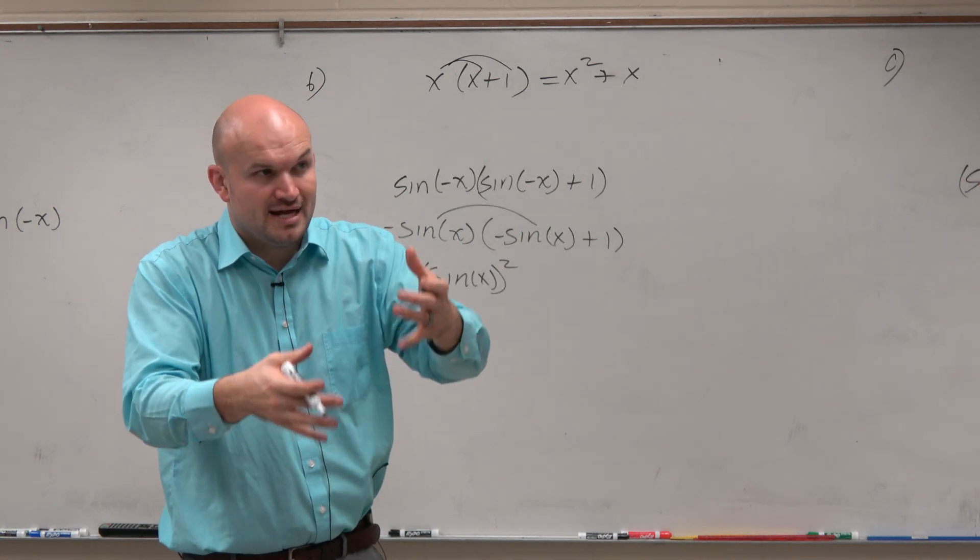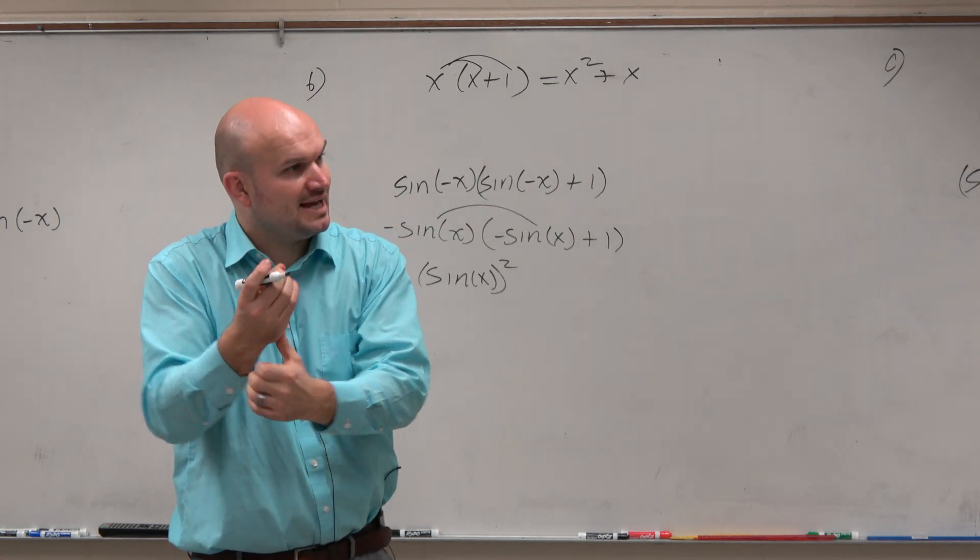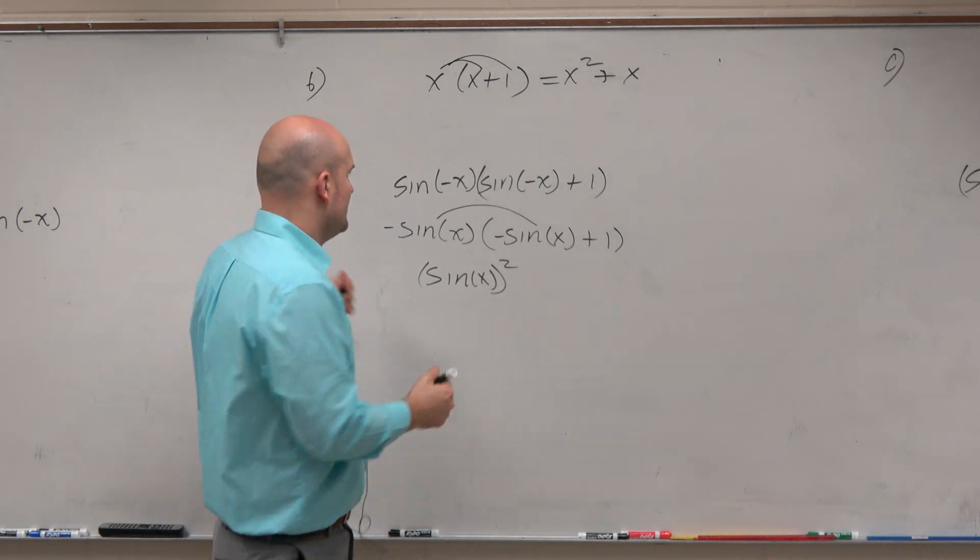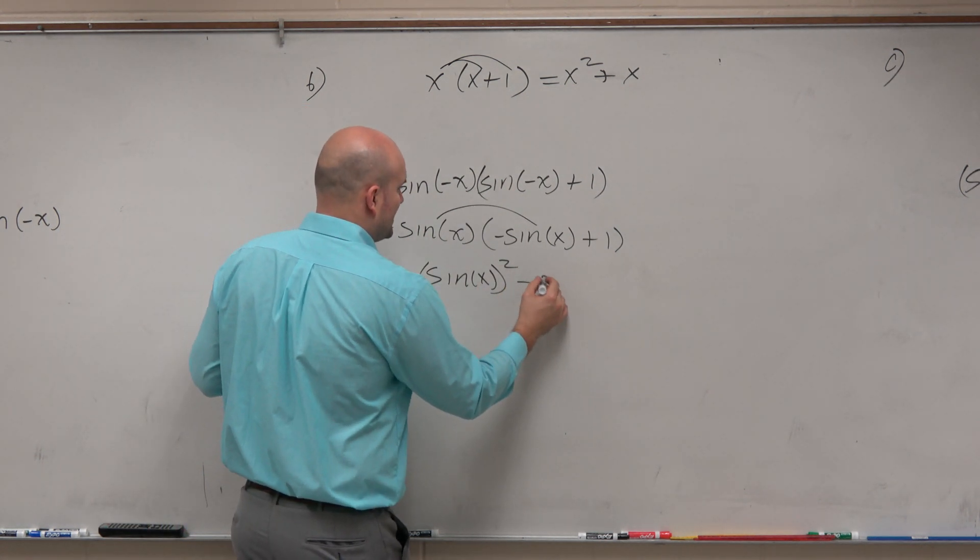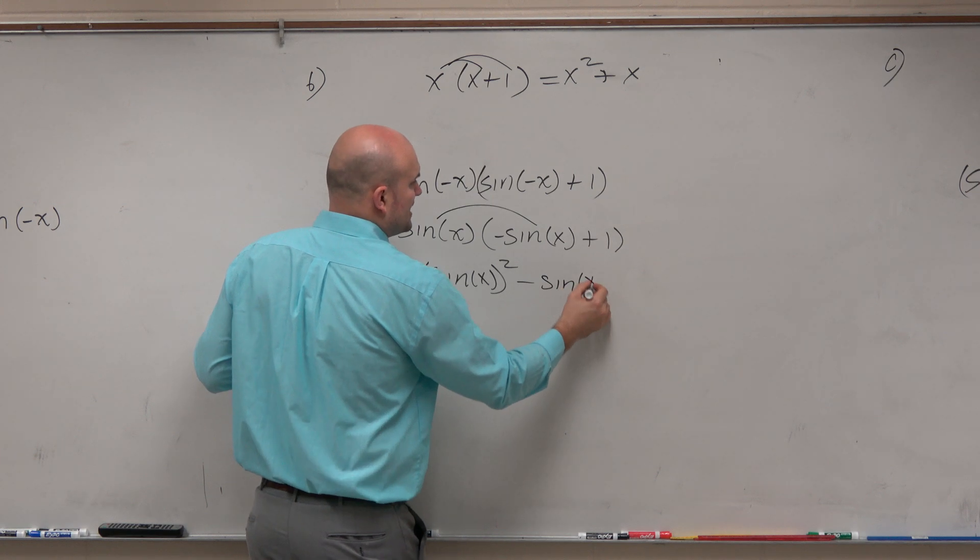You're not squaring the angle or just the x. You're squaring the whole function. And then negative sine of x times 1 is going to be negative sine of x.